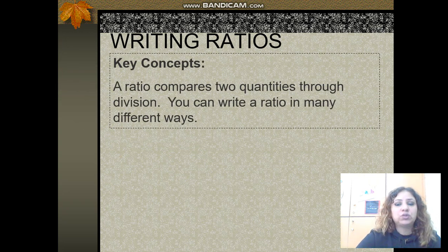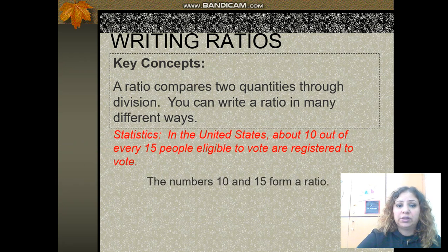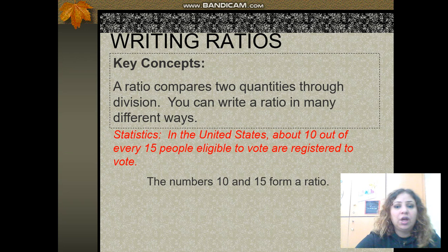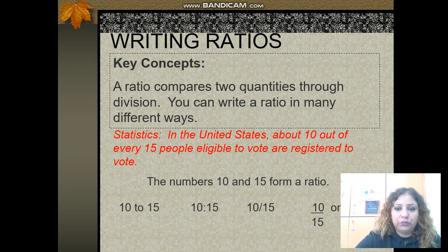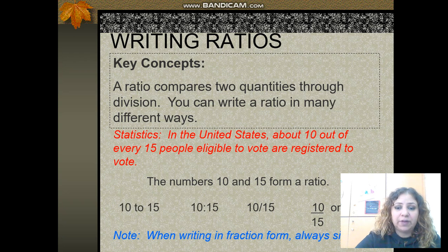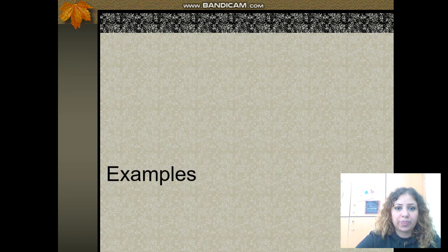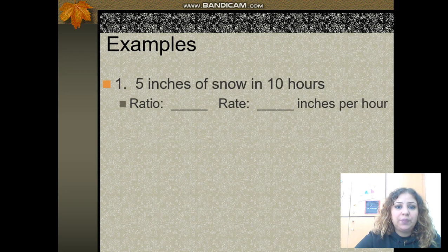Writing a ratio is the key concept. A ratio compares two quantities through division, and you can write a ratio in many different ways: using a fraction, using a colon, or using the word 'to.' You always have to simplify your ratio or fraction by dividing the numerator and denominator by the same factor.